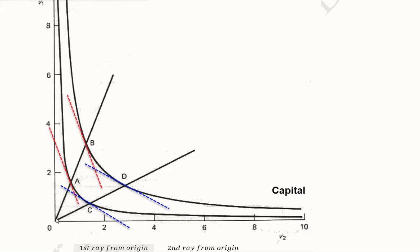Now if we make two rays from the origin, starting from here and going here, and the other ray starting again from the origin and going to this point, we have these two rays. These rays will help us estimate the slopes.